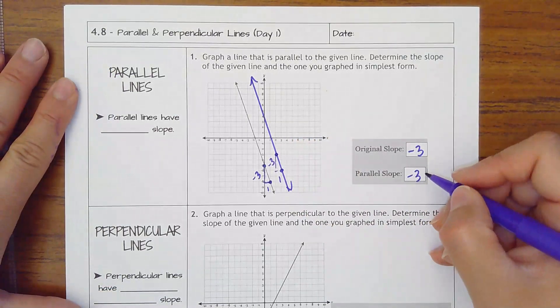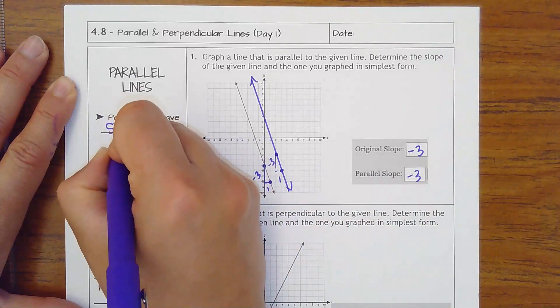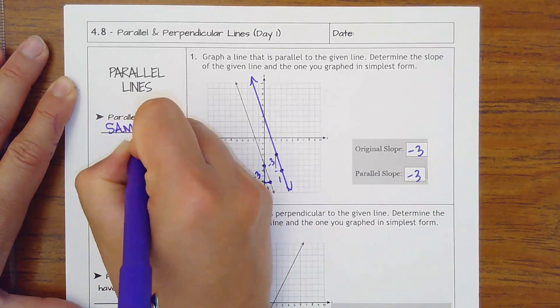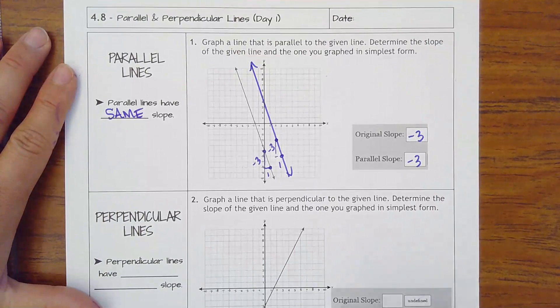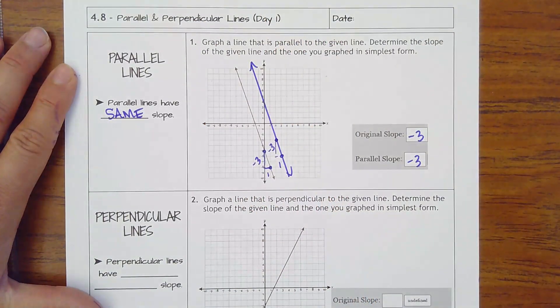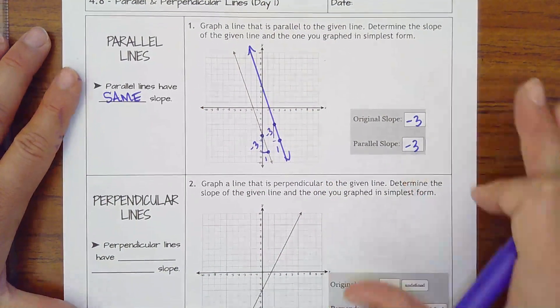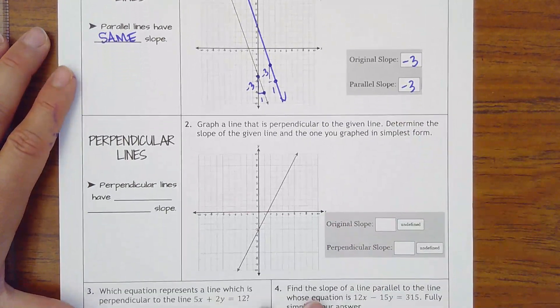So what you should know is that parallel lines always have the same slope. Always, always, always. That's what makes them go in the same pattern or the same rate at the same angle kind of thing. All right.